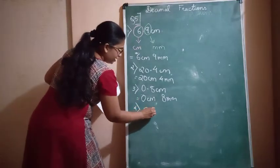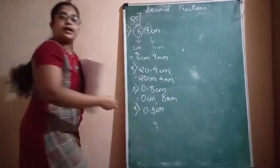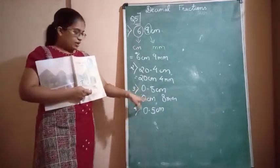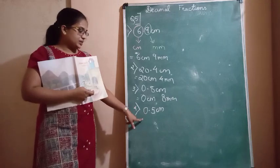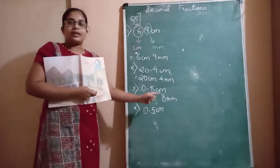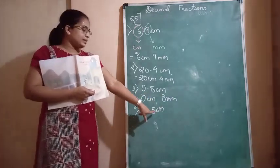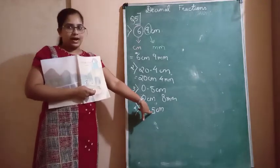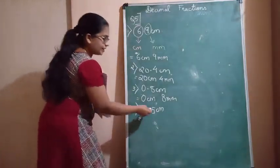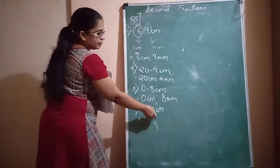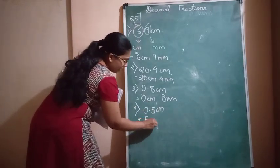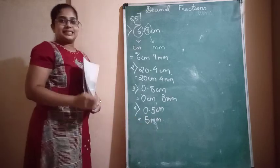The next question is 0.5 centimeters. It is similar: the part before the decimal is 0 centimeters and the digit after the decimal point is the millimeters. So here we have 5 millimeters. You can write it as 0 centimeters and 5 millimeters, or directly as 5 millimeters.